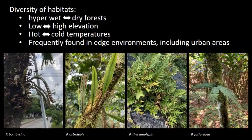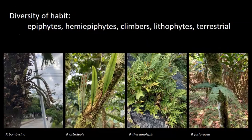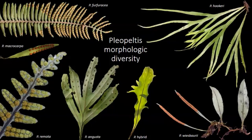Where do Pleopeltis actually grow? You can find them in a bunch of different habitats, from hyper-wet to dry forests, low elevation to high elevation — basically every environment under the sun. They're also frequently found in disturbed environments; I took a photo of Pleopeltis bombacina in the middle of a busy highway median in Villavicencio, Colombia last fall. In addition to habitat diversity, they have diversity of habits: the majority of species are epiphytic, but you can also find them growing as hemiepiphytes, climbers, lithophytes, and even terrestrially. And look at this leaf diversity — ranging from simple entire, all the way up to twice pinnate, with forked and dimorphic forms.